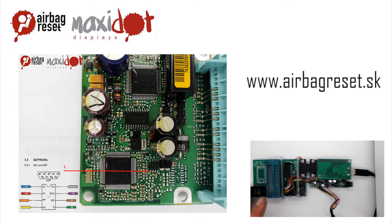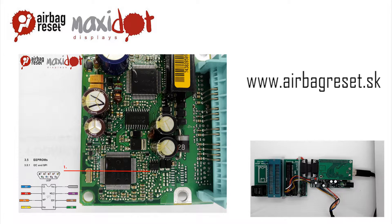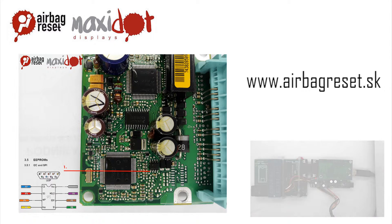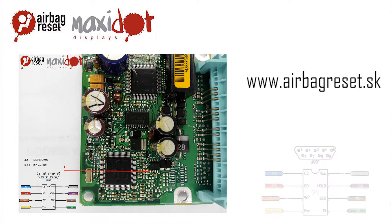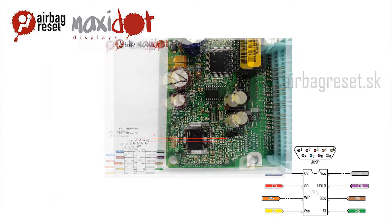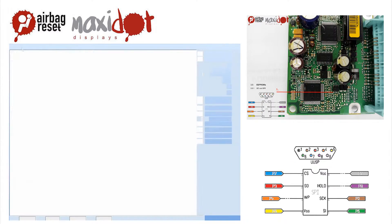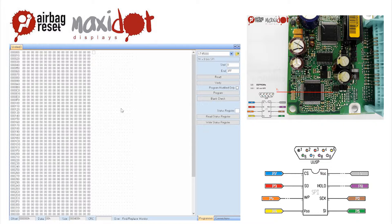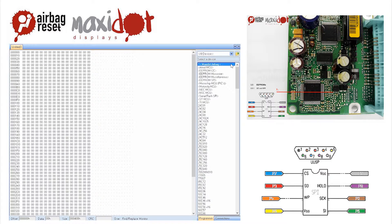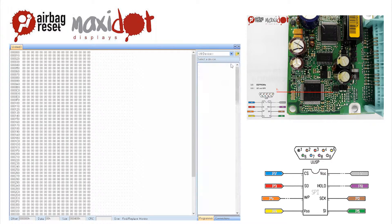To facilitate the work with airbag units, we offer a script which, after easy installation, works with the programmer via USB and includes the following features. The Read function automatically verifies the correctness of a reading of the airbag unit 95910-25600.